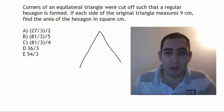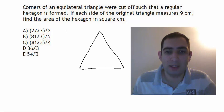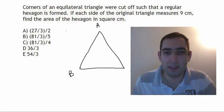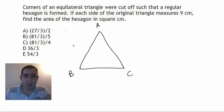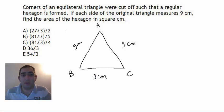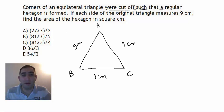We have an equilateral triangle with 9 centimeter sides. Let's call the vertices A, B, and C. Each side is equal to 9 centimeters. The corners of this equilateral triangle are going to be cut off.